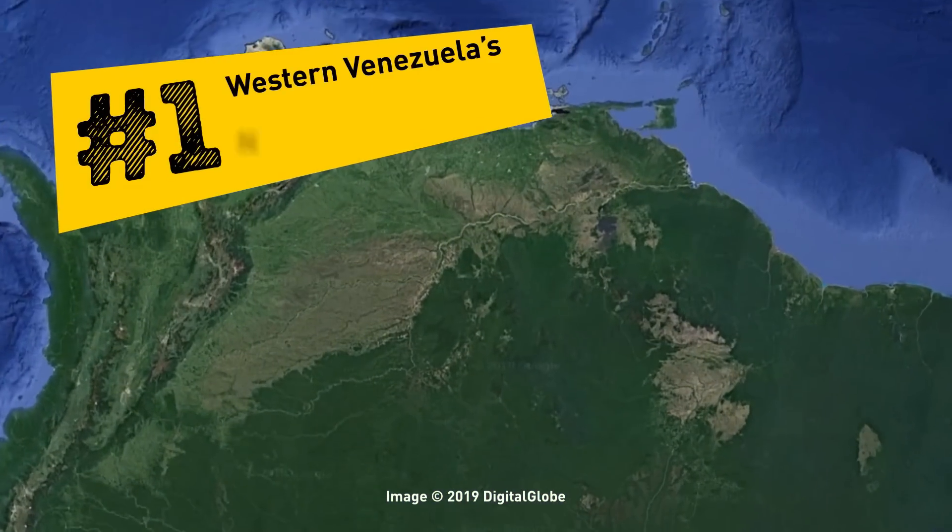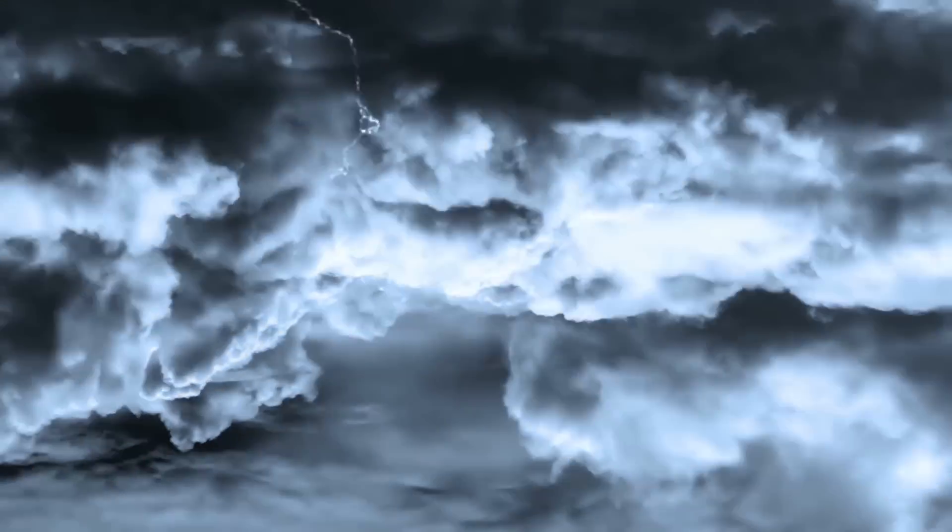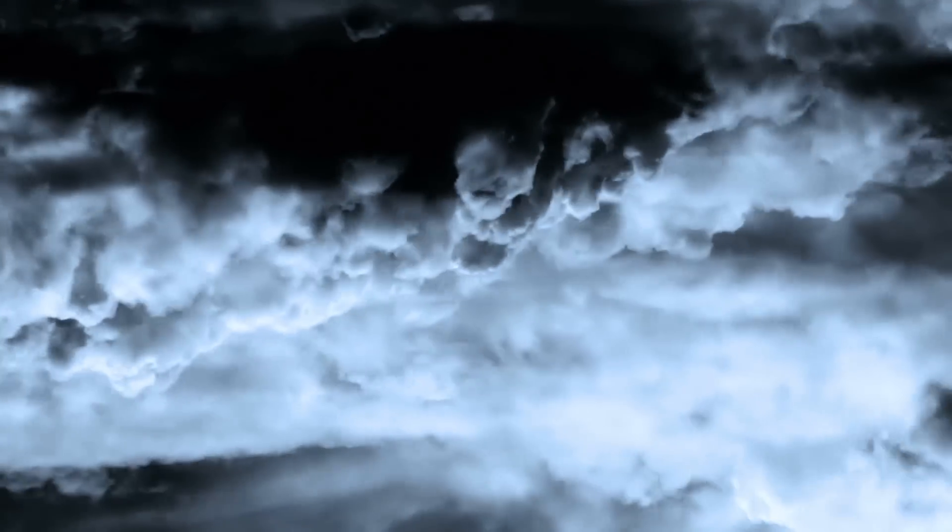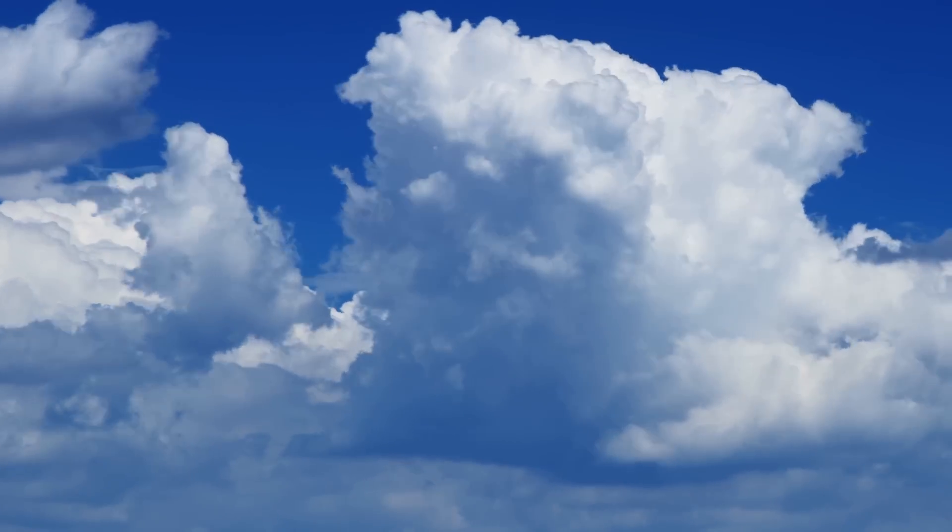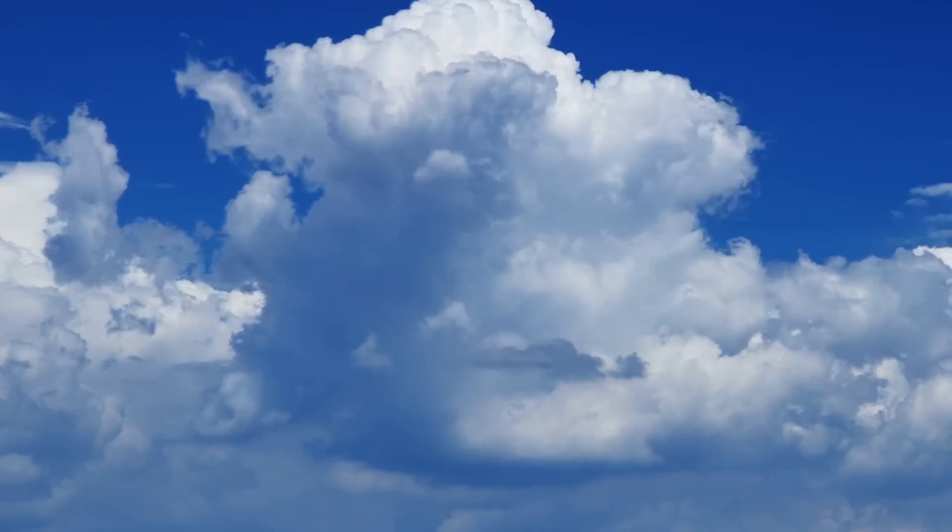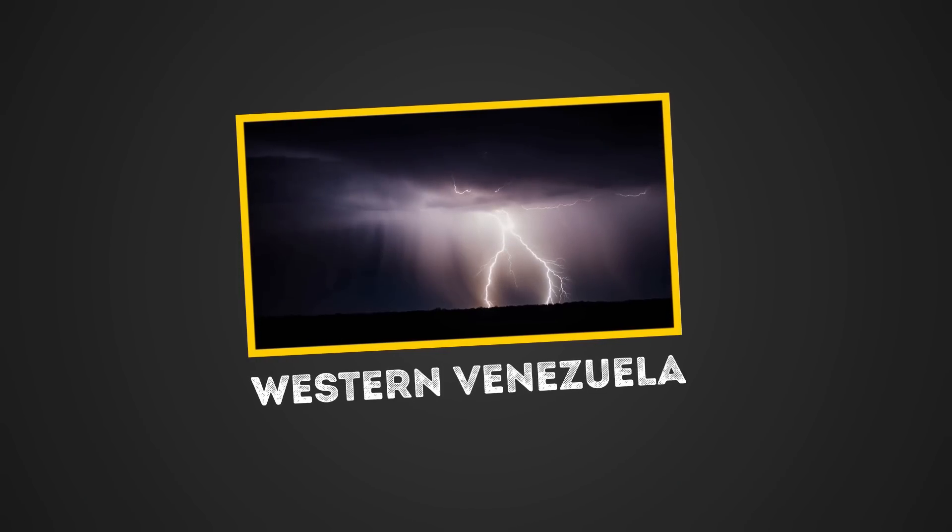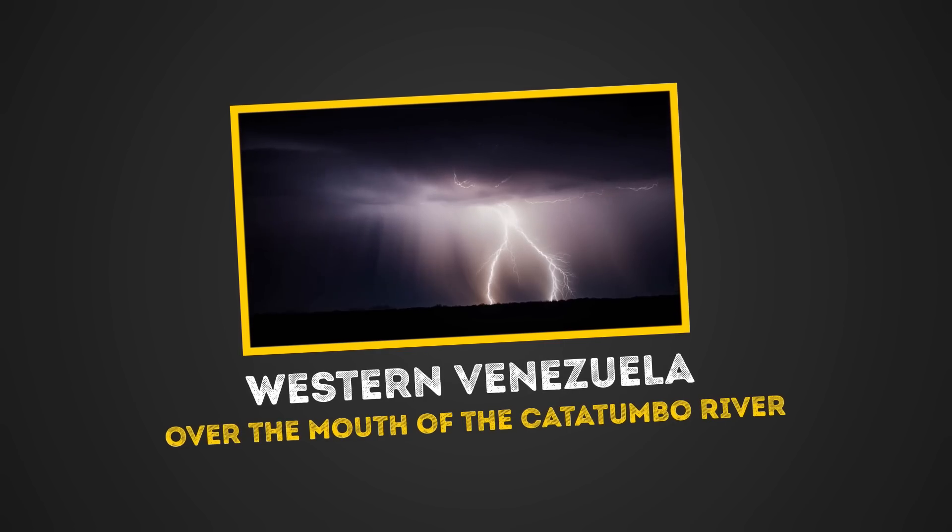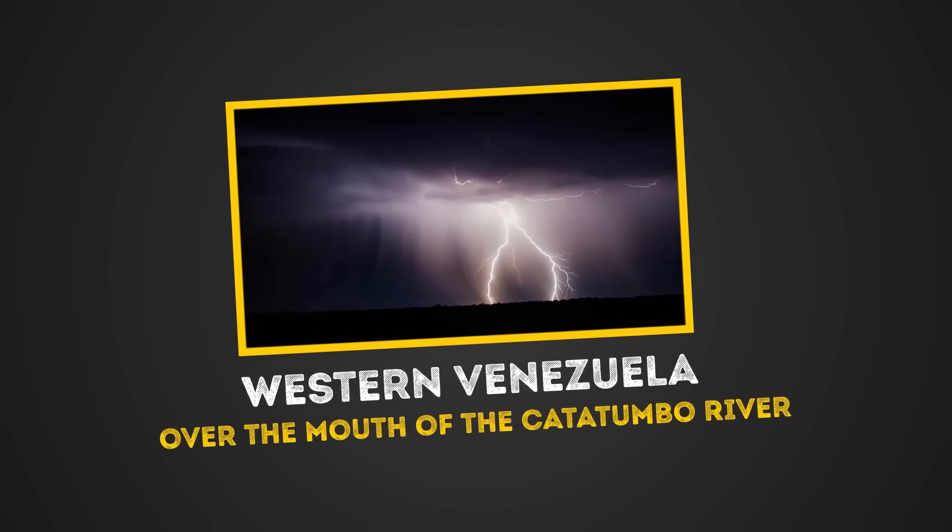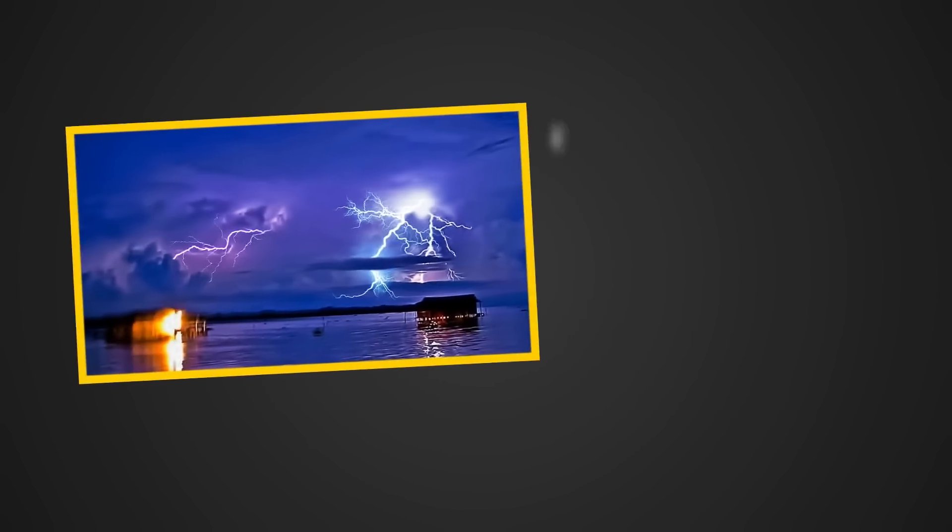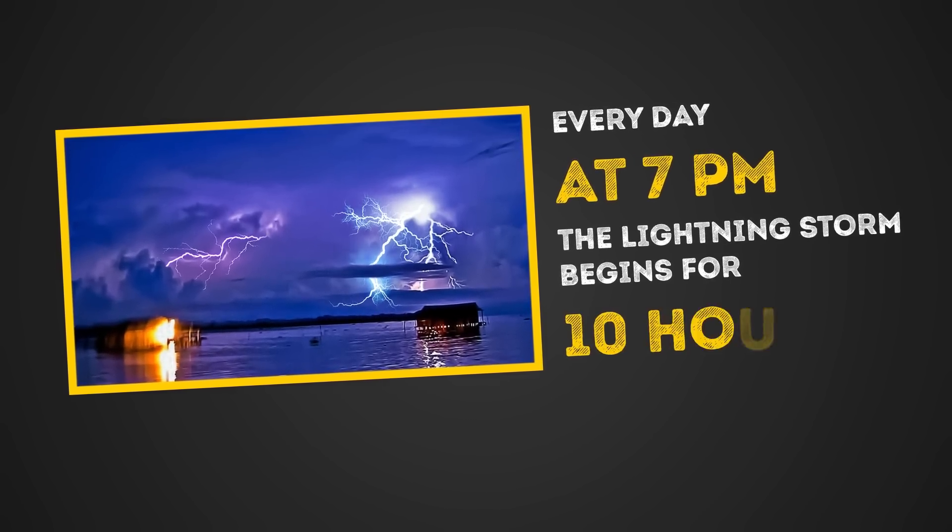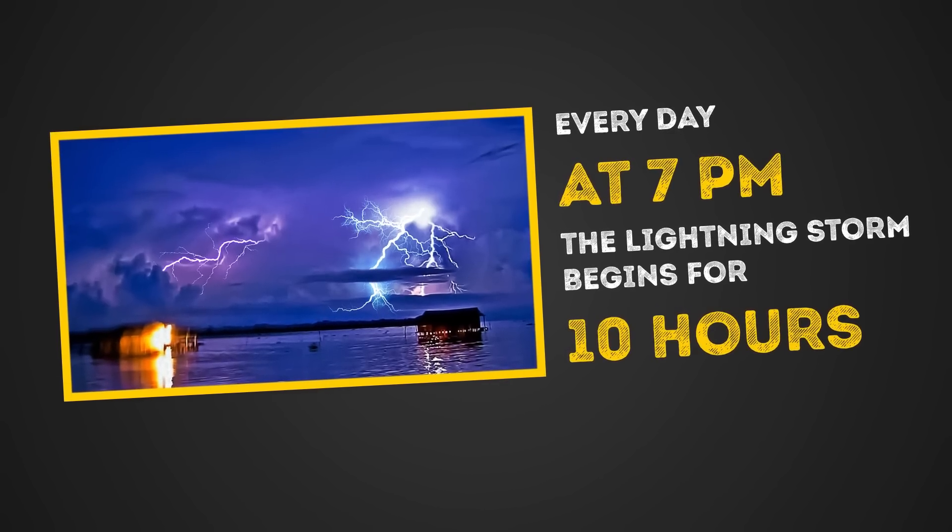Number 1. Western Venezuela's never-ending light storm. Lightning storms are pretty cool, aren't they? They light up the sky, and you can't help but feel a special, exciting energy in the air. But these lightning storms usually end, and you go about living your life. But in Western Venezuela, over the mouth of the Catatumbo River, there's a lightning storm that seems to be running on Energizer batteries. It just keeps going and going. Once the clock strikes 7 pm, the lightning storm begins and doesn't relent for another 10 long hours. This happens most nights during the year.